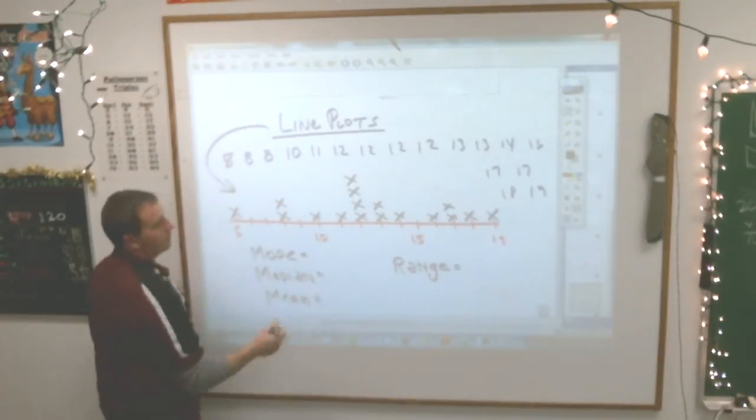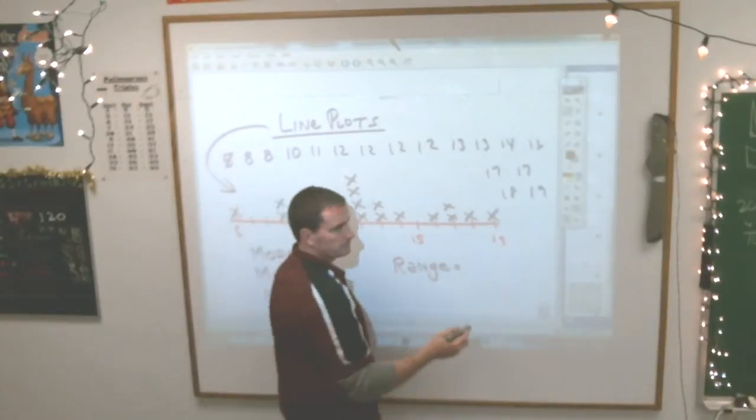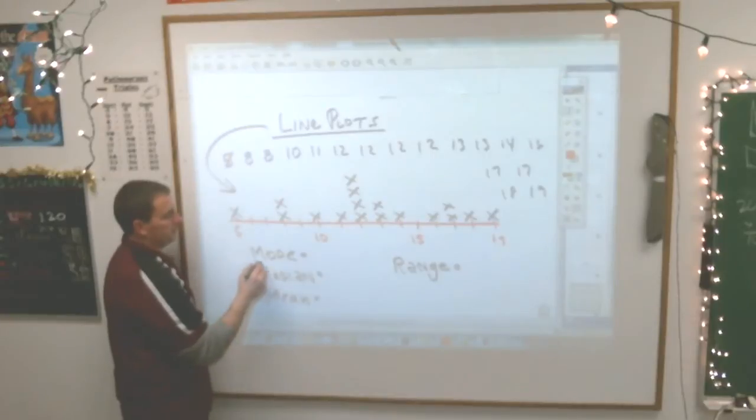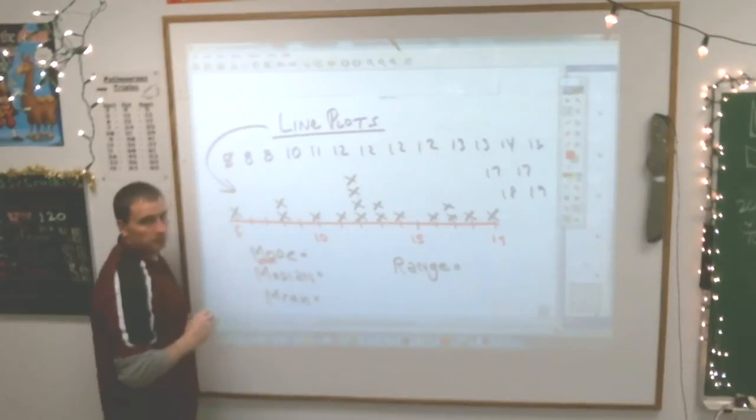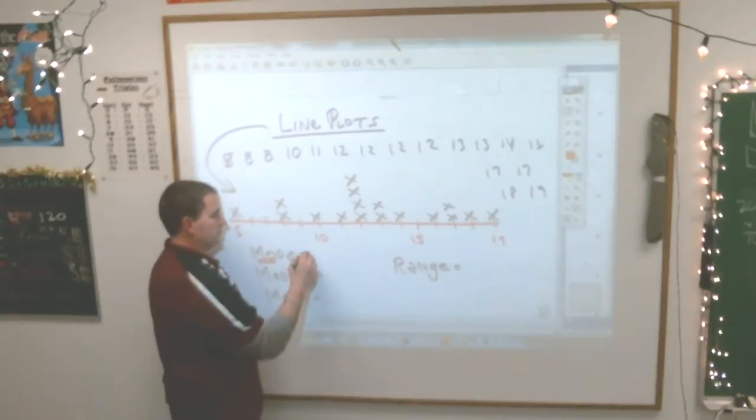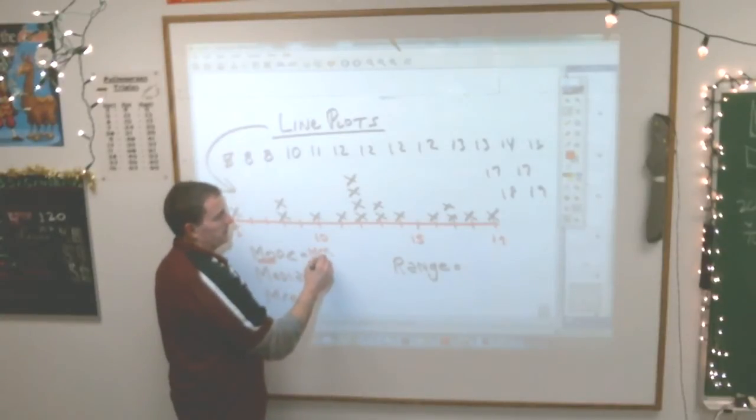Do you remember what the mode is? Just remember the first two letters there. Mode is the number that happens the most. So in this case, the number that happens the most is 12.